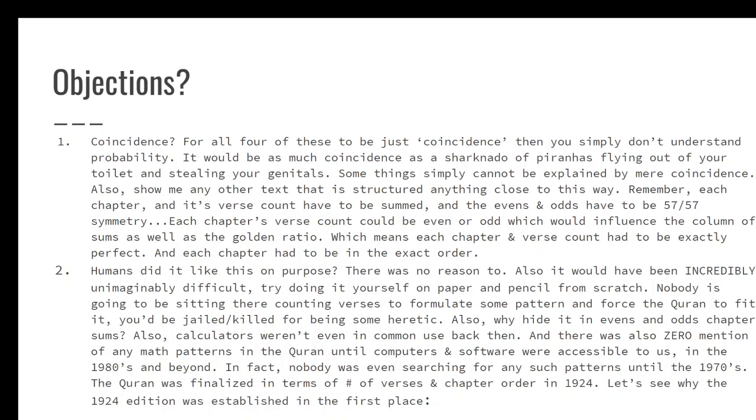And if we travel back to 1924, they did not have software or even calculators. Those were more popular and became commonly used in like the 1960s or 70s. So by the time the Quran was finalized in 1924, it would have been extremely difficult to even detect such a pattern. So, yeah, each chapter's verse counts could be even or odd, which would influence the column of sums as well, is the golden ratio. So all that means is one verse could be off and the whole thing falls apart.